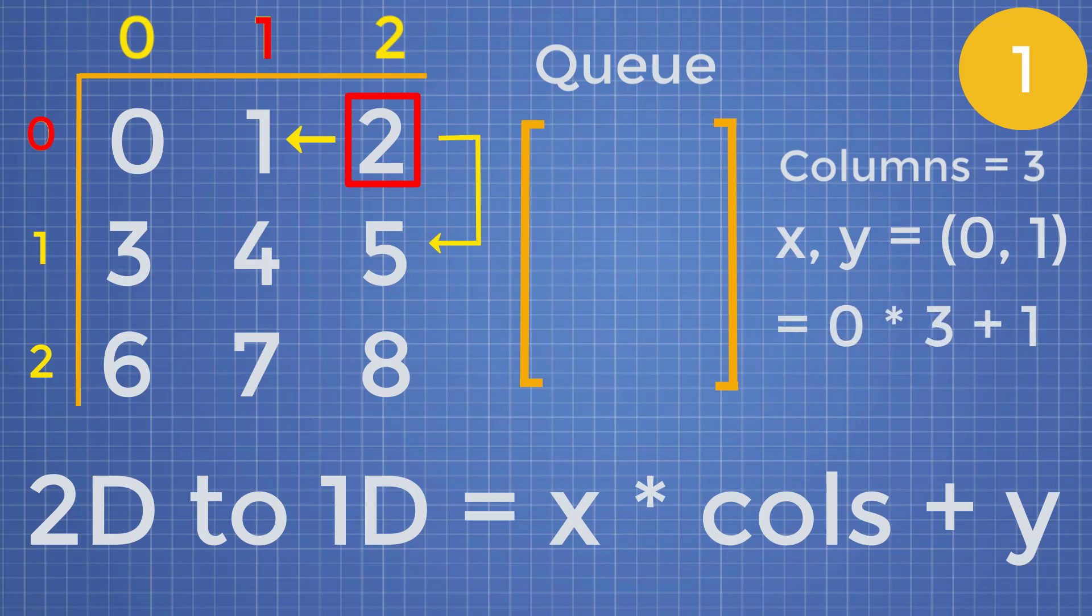So if we were to attempt to add coordinate 0, 1, which corresponds to vertices 1 inside of our queue, we are going to take that position 0, 1, and we're going to apply the formula. We're going to do 0 times 3 plus 1, which equals 1. And that means we can just add 1 inside of our queue now. Once again, we're going to add the neighbor of node 2, which would be node 5, which corresponds to the position 1, 2. If we apply the formula, that will be 1 times 3 plus 2, which equals 5. And that means we can add 5 inside of our queue.